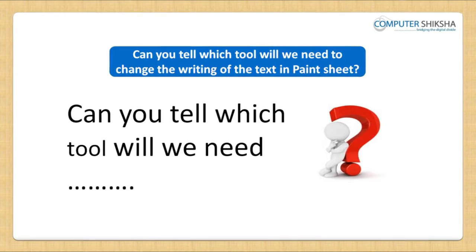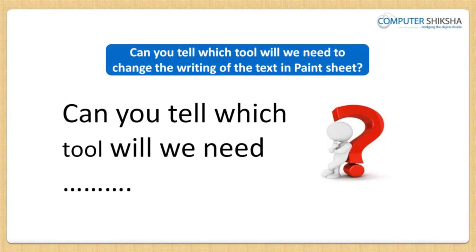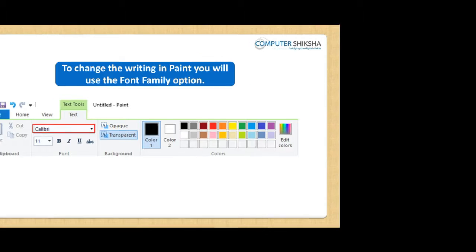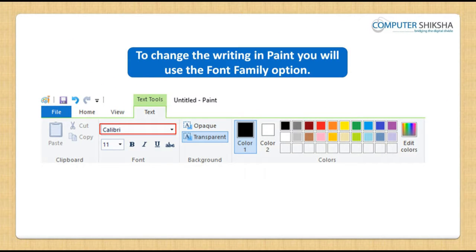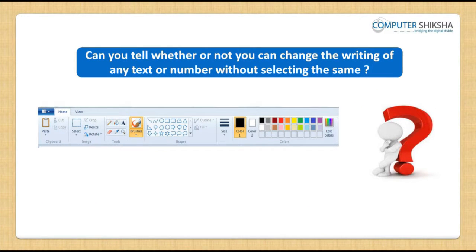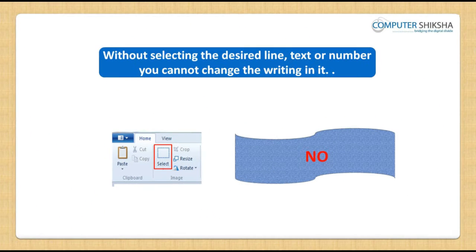Can you tell what option you will need to use to change the writing of the text in your paint sheet? To change the writing in paint, you will use the font family option. Can you tell whether or not you can change the writing of any text or number without selecting the same? Without selecting the desired line, text or number, you cannot change the writing of it.